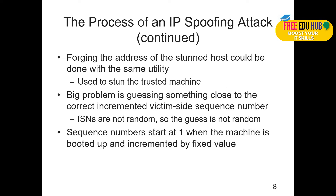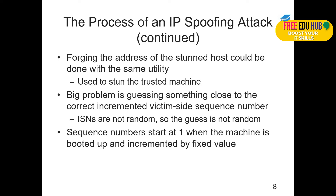Forging the address of the stunned host can be done with the same utility used to stun the trusted machine. Tools include Kali Linux, Windows-based tools, or specially crafted scripts. A key challenge is guessing something close to the correct incremented sequence number of the victim. ISNs are not random — when capturing packets, the sequence number is captured and it is incremental: 3001, 3002, 3003, 3004, and so on. Sequence numbers start at 1 when the machine boots and are incremented by a fixed value.